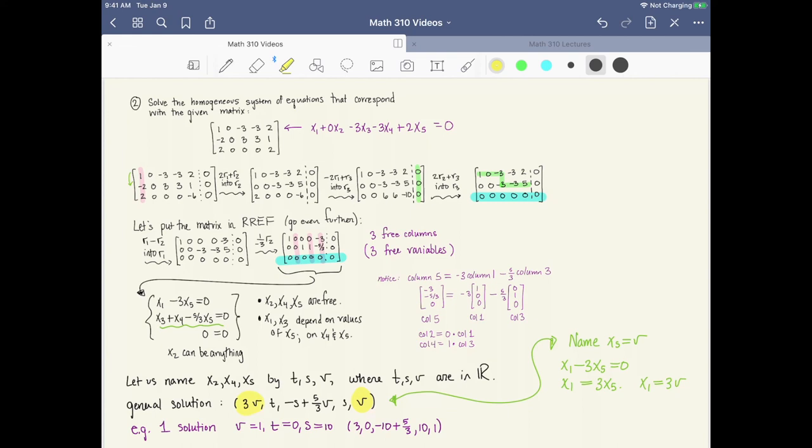I can do something similar to understand the other entries. I'm going to name x2 to be t. So that's going to show up in the second entry here as t. x2 doesn't factor into anything else. And then I've also named x4 to be equal to s, and so you see that showing up here in the fourth entry as s.